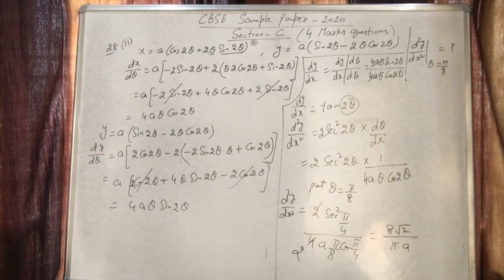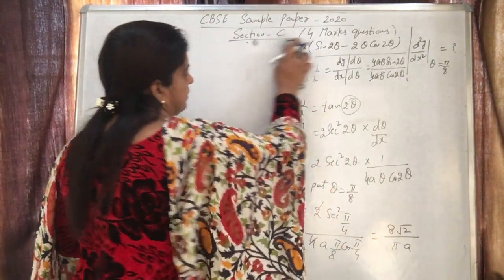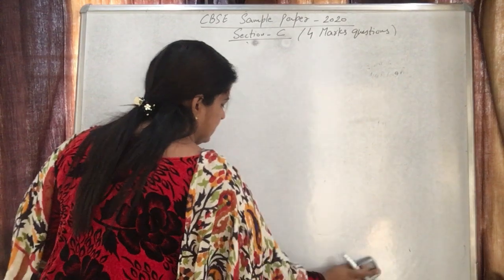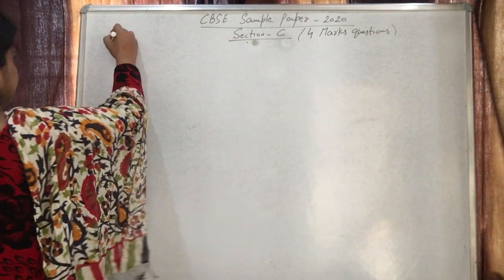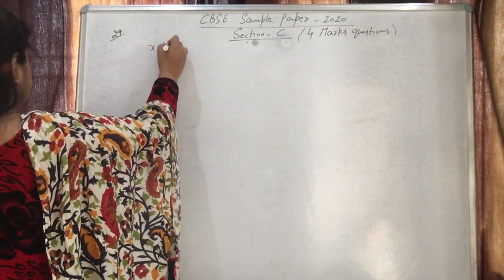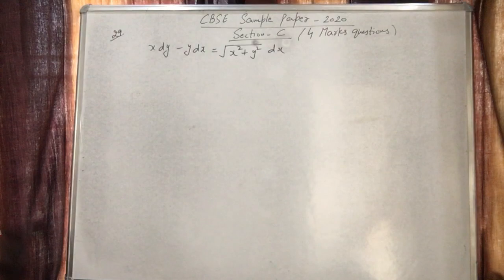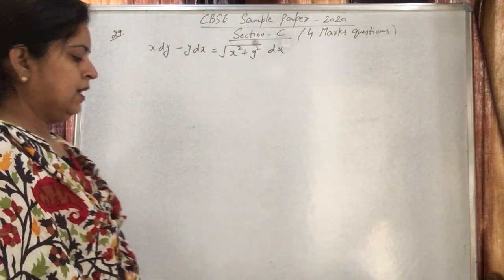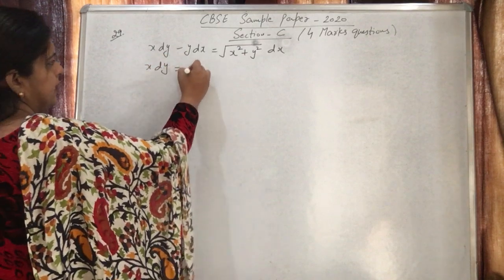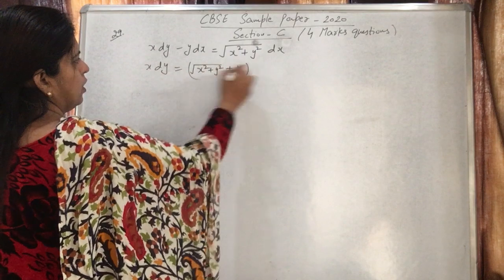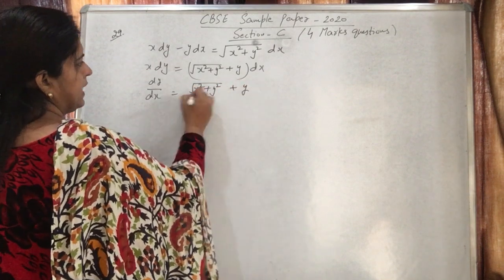Question number 29: Solve the differential equation. Rearranging into dy/dx form, we get dy/dx = (√(x²+y²) + y)/x. Checking the degree of each term — all terms have degree one — this is a homogeneous differential equation.